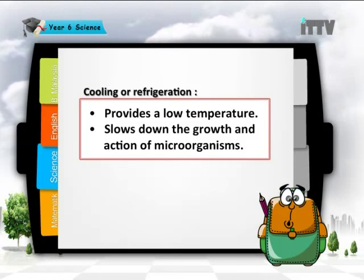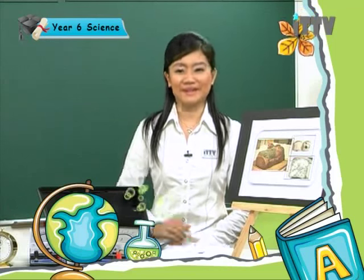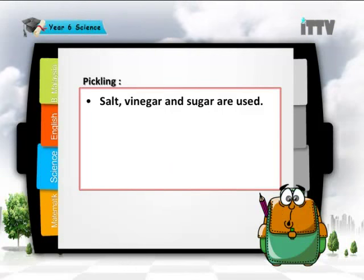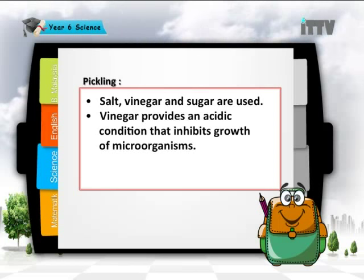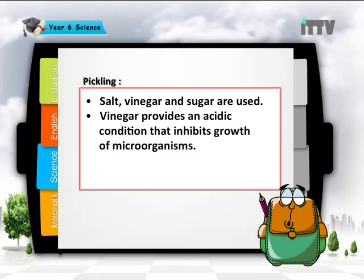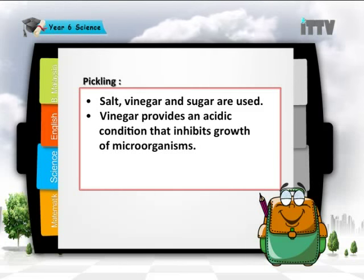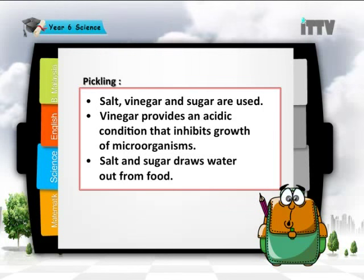Now you know why you have a big fridge at home — to preserve food. The next method is pickling. Pickling involves salt, vinegar, and sugar. Vinegar provides an acidic condition that inhibits or prevents the growth of microorganisms. Salt and sugar draw water out from food.